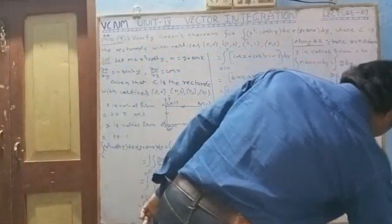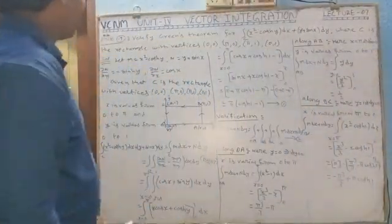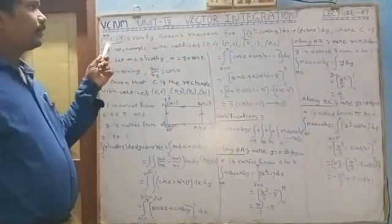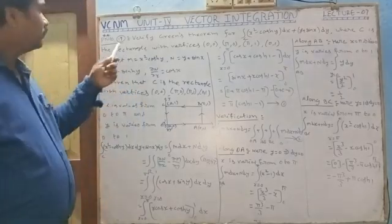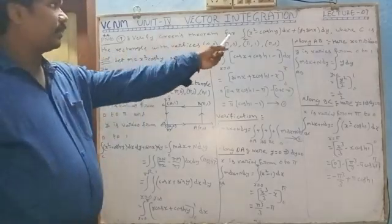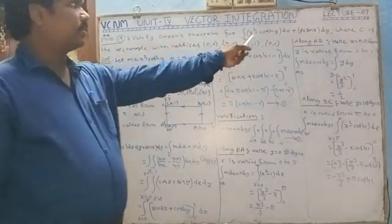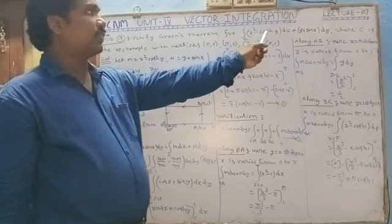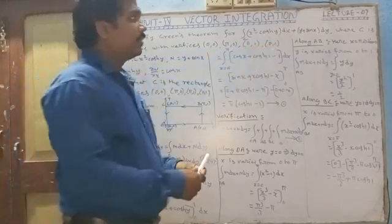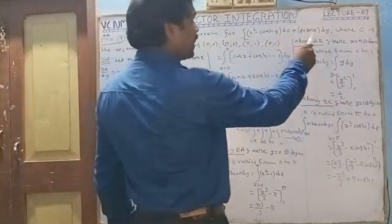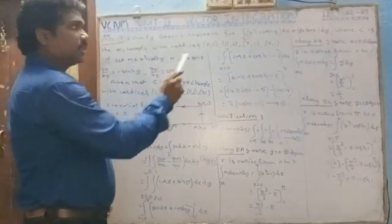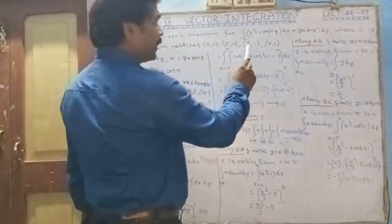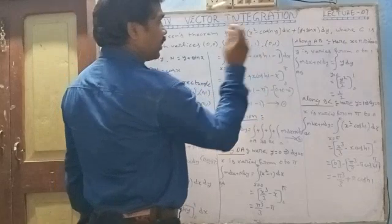Problem number 9B, lecture number 7. Where is the difference theorem? Integral over C of x squared minus cosh(y) dx, plus y plus sin(x) dy, where C is the rectangle with vertices (0,0), (π, 0), (π, 1), and (0, 1).